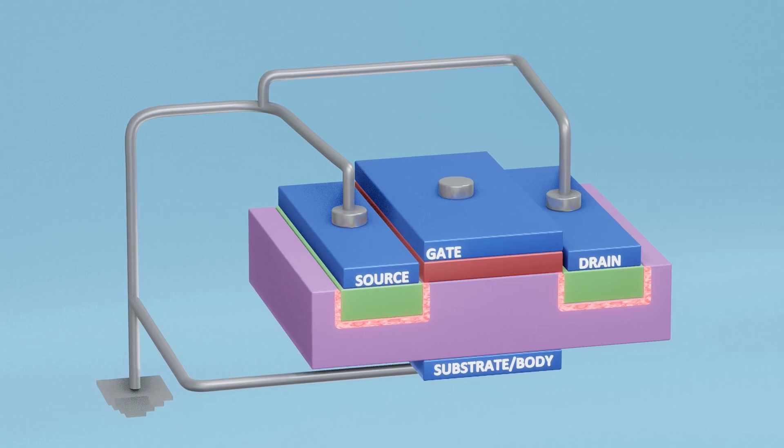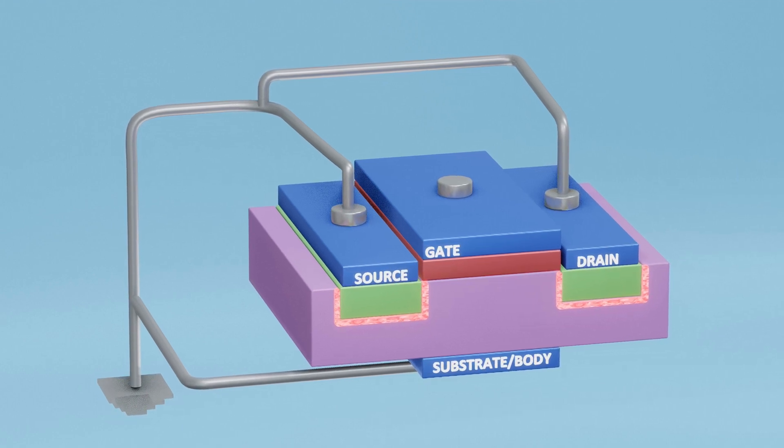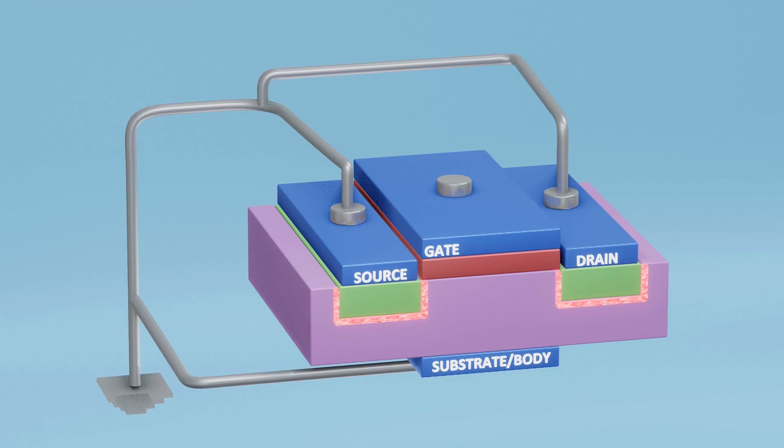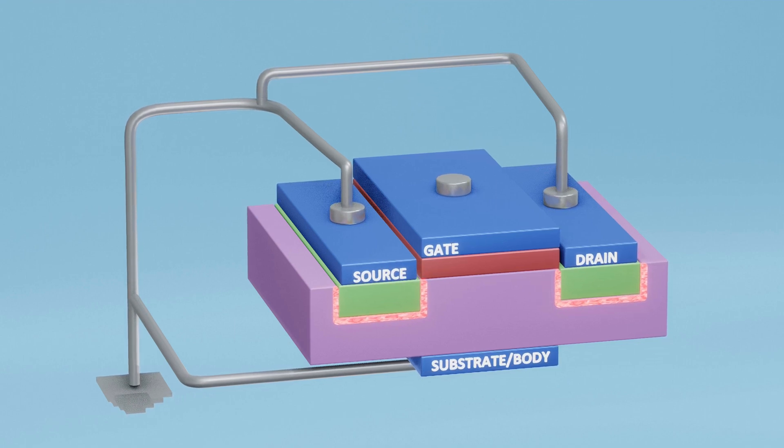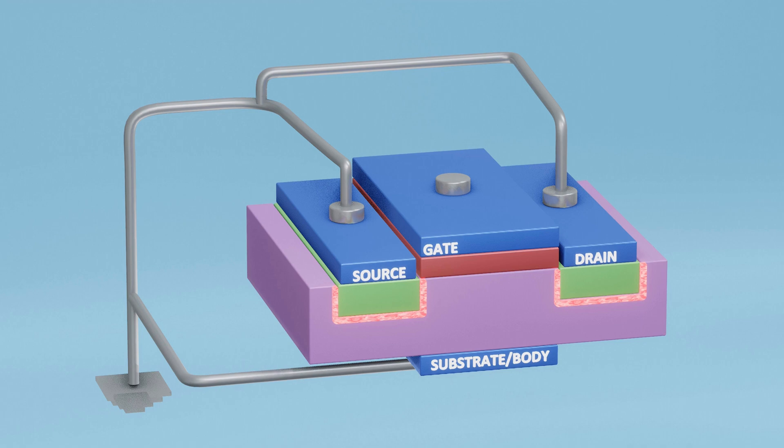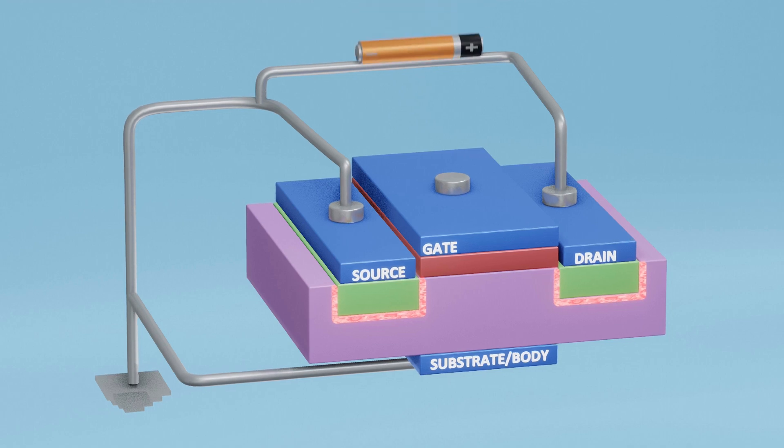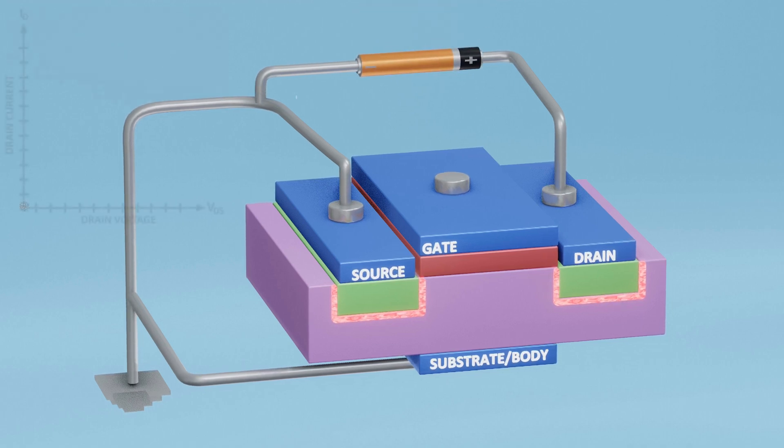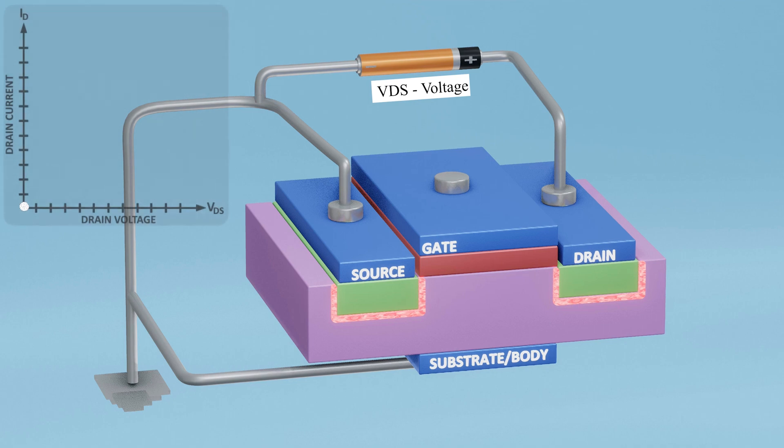In the MOSFET, we want to allow conventional current to flow from the drain to the source. This operating mode is called the cutoff region. To achieve this, we connect a battery between the drain and source, creating a voltage called VDS voltage between the drain and the source.